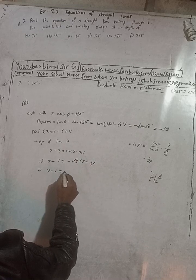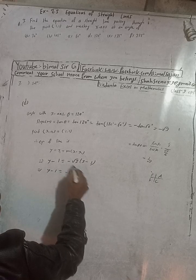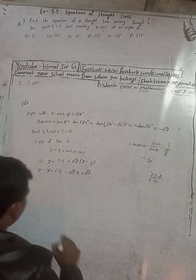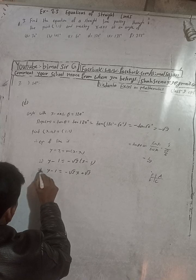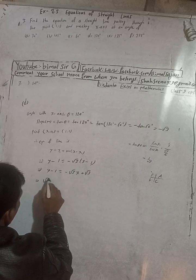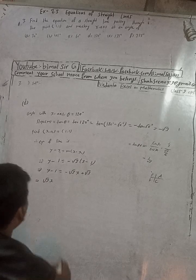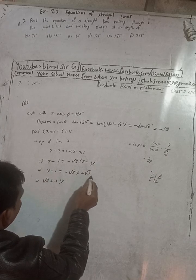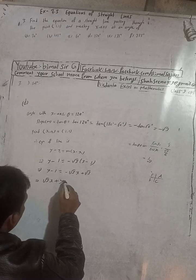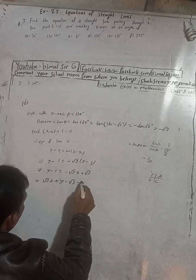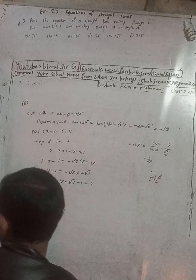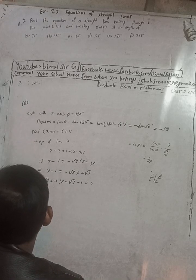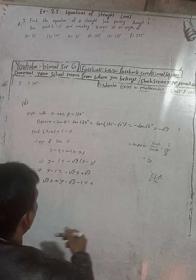Expanding: y minus 1 equals minus root 3 x plus root 3. Rearranging: root 3 x plus y minus root 3 minus 1 equals 0. The book answer for part (d) is root 3 x plus y minus root 3 minus 1 equals 0. This matches our answer.